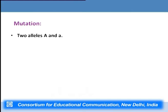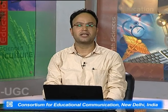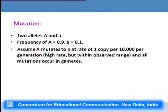Taking another example: suppose we have two alleles for a gene locus — capital A and small a — with frequencies of 0.9 and 0.1 respectively. We assume capital A mutates to small a at a rate of 1 per 10,000 per generation, which falls within the observed range, and all such mutations occur in gametes. The question is: how much does this mutation rate change the gene pool in the next generation?